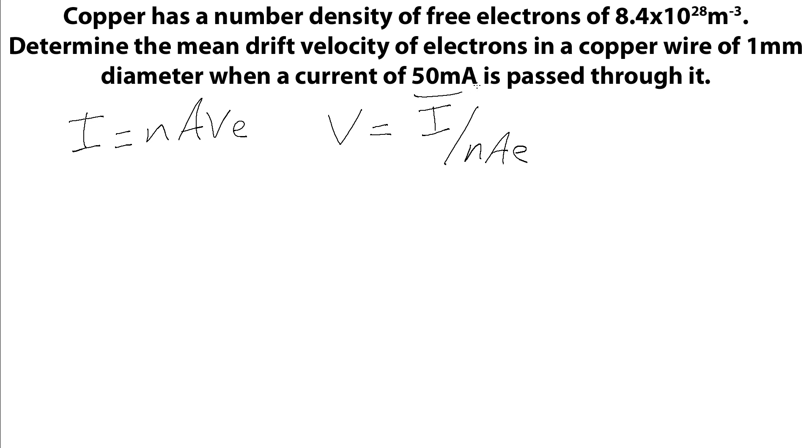Now, the current is this, so that can just go in there. The number density we've got up here, so this number goes into where we've got our N. Our value for E is for an electron, that's the 1.6 times 10 to the minus 19 coulombs. And so we've just got the area left to work out.